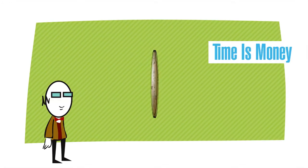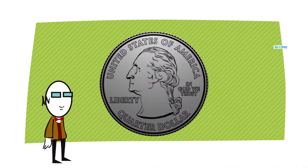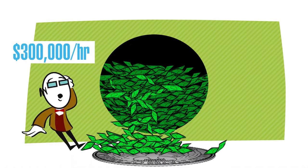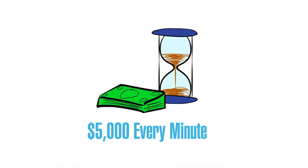Everybody knows that time is money, but do you know how much money you lose when one of your critical applications crashes? How about $300,000 an hour? According to industry research, that's what it costs the average company when a key app goes down. That's $5,000 every minute.